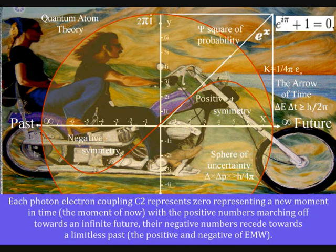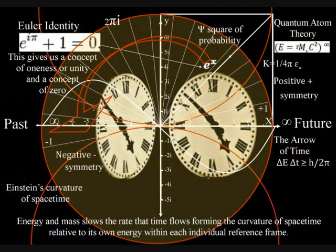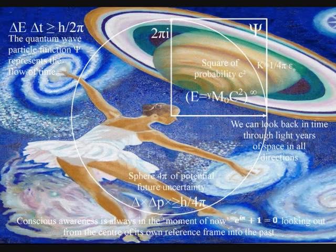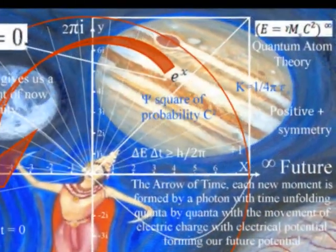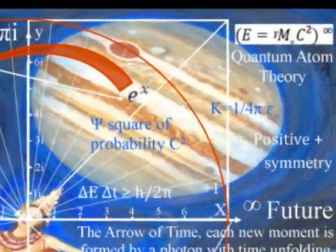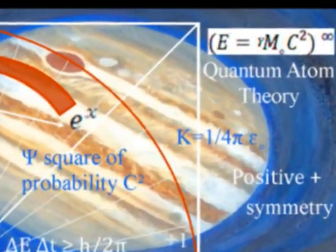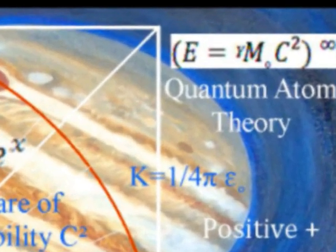In this theory, objects form their own time by slowing up the rate that time flows, relative to their own energy or momentum. Gravity is not a real force; objects just freefall towards the greatest energy, because it has the slowest rate of time, or the greatest time dilation.